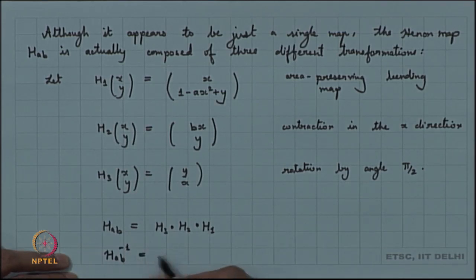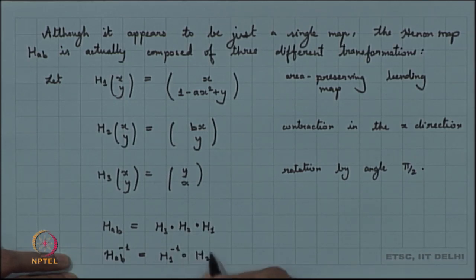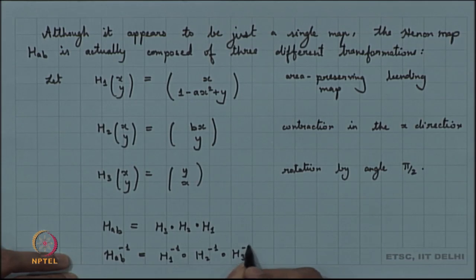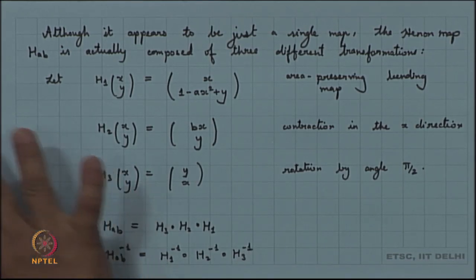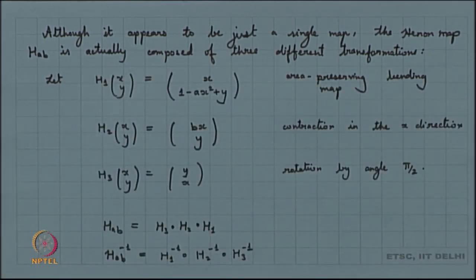Since h₁, h₂, h₃ are all invertible, the Hennon map is also invertible. The inverse of the Hennon map is h₁⁻¹ composed with h₂⁻¹ composed with h₃⁻¹. This is an invertible system.